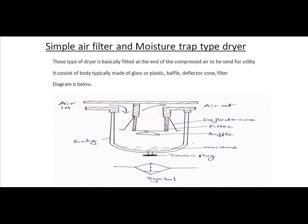How the air gets into the dryer and how the moisture is trapped: there is a deflector cone, there is a filter, and the air after getting through the deflector and through the baffle plate, the moisture gets trapped at the bottom. There is a drain plug through which the moisture gets drained and the air gets out which is cleaned and moisture free.